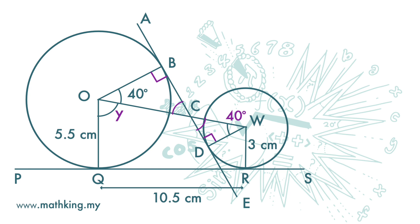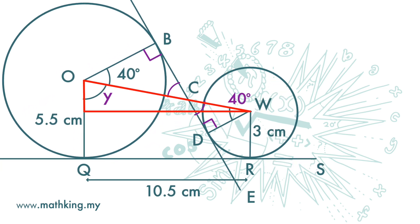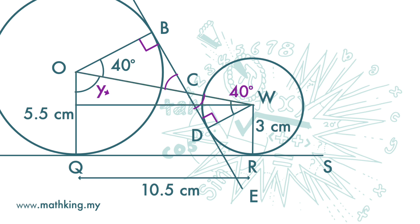Next, we want to find Y. We can actually draw a line here. Then, we get this triangle. This is the opposite of angle Y. It is 10.5 cm. And this is the adjacent of angle Y. It is 5.5 minus 3. Equal 2.5 cm.